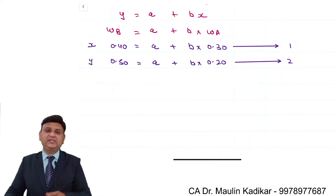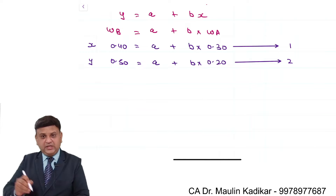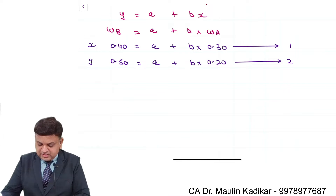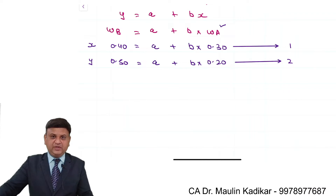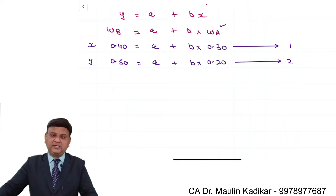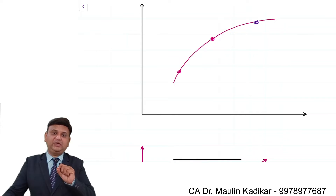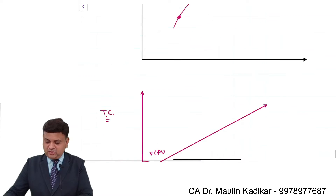Using these two simultaneous equations, we will compute the values of constants A and B. Once we have those, we substitute the weight of A = 0.50 to compute the weight of B for portfolio Z. The weight of C will then be found as a balancing figure. This works because on the minimum variance set, the weights of individual securities change proportionately — a linear relationship holds.